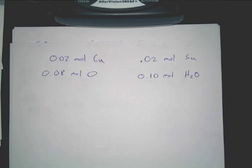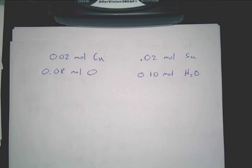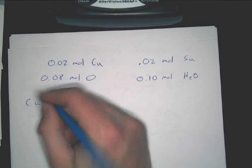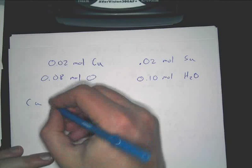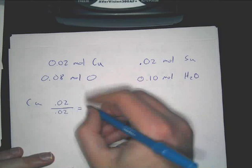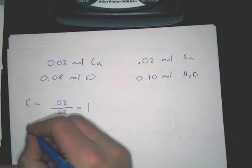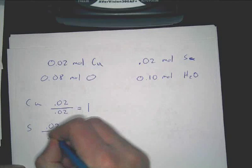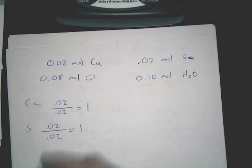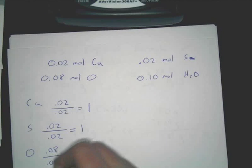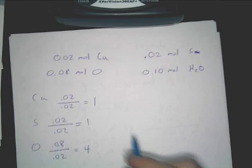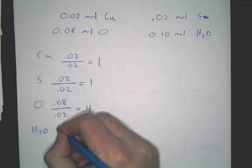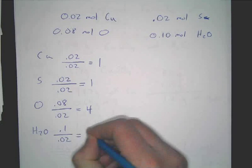Which one of these is the smallest value? 0.02 is the smallest. So we're going to divide each of them by 0.02. Copper: 0.02 ÷ 0.02 = 1. Sulfur: 0.02 ÷ 0.02 = 1. Oxygen: 0.08 ÷ 0.02 = 4. Water: 0.1 ÷ 0.02 = 5.